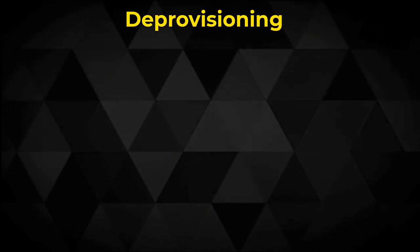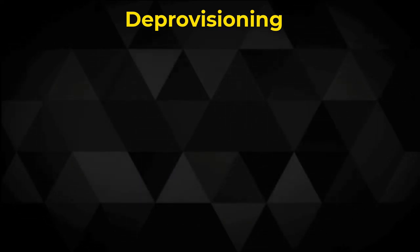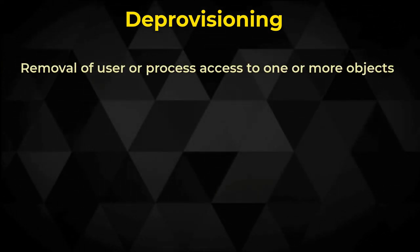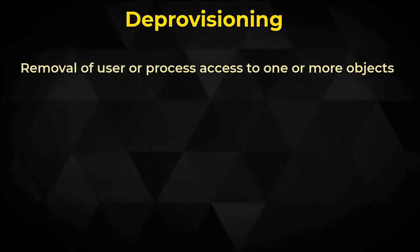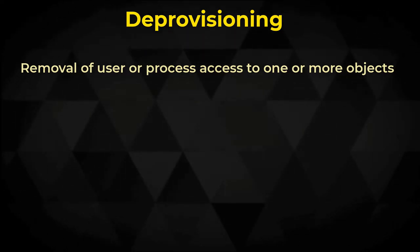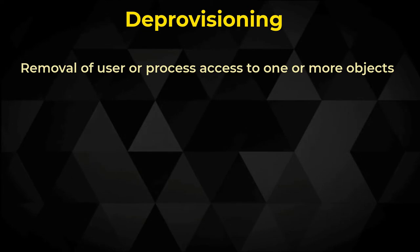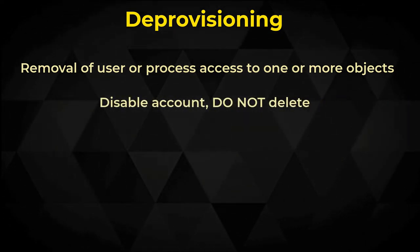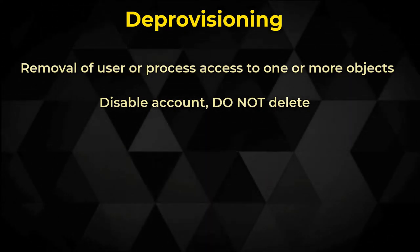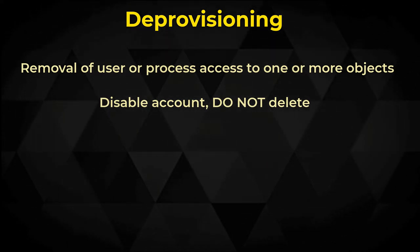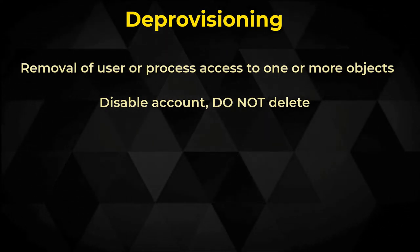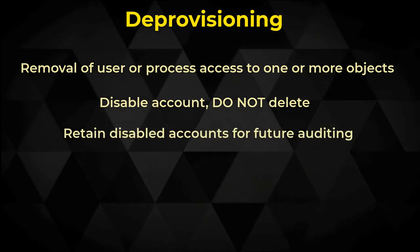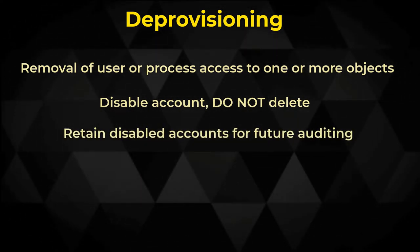Once a subject no longer needs to use one or more resources, the organization should remove its ability to see or access those resources. This is known as deprovisioning. For example, when an employee terminates her employment, the organization must ensure she can no longer authenticate, most often accomplished by disabling the employee's identification, or account, used for credential comparison. Once an account is disabled, authentication is no longer possible. We disable accounts instead of deleting them because we might have to use them to access information they created or securely stored, and to ensure solid audit trails.